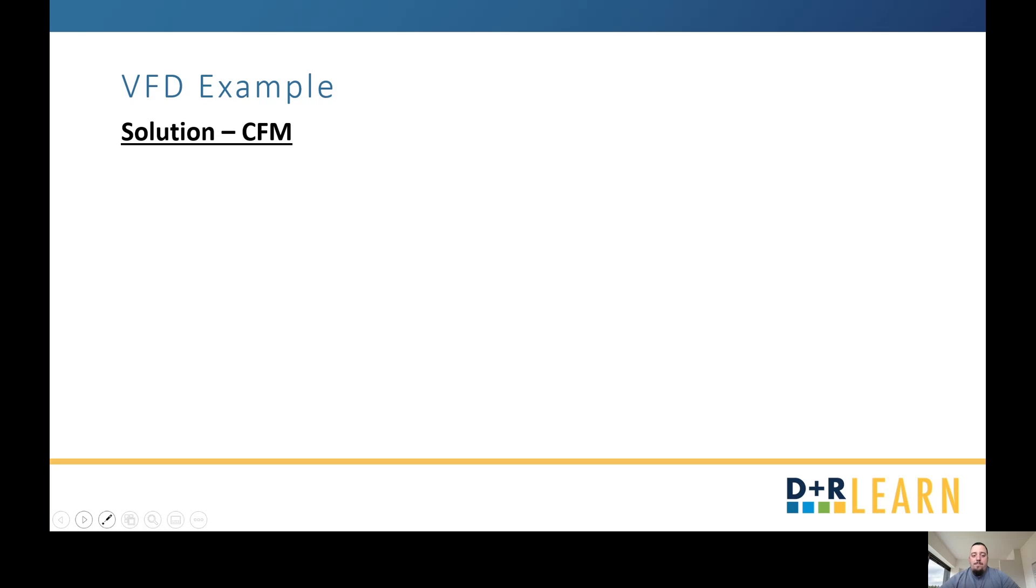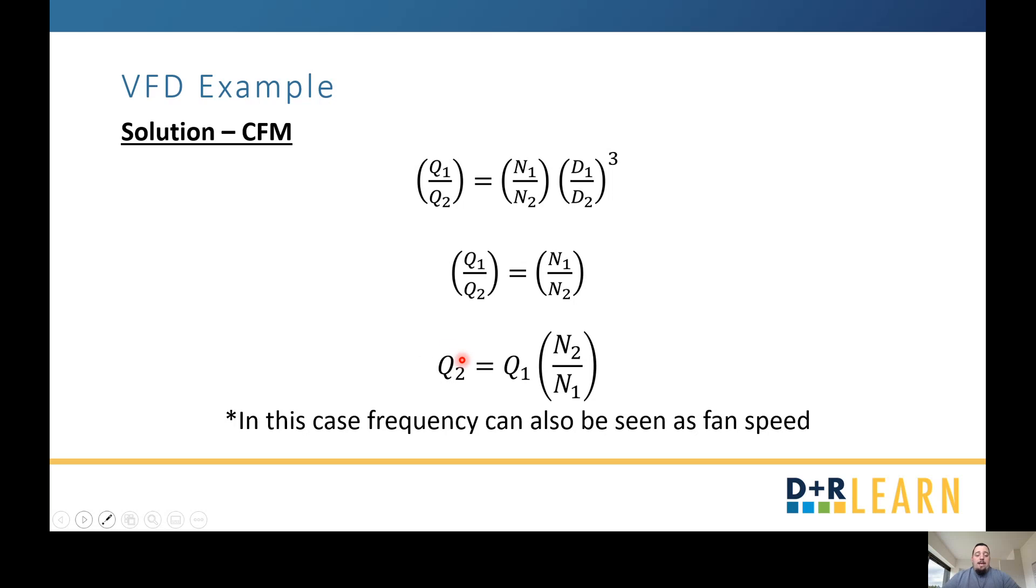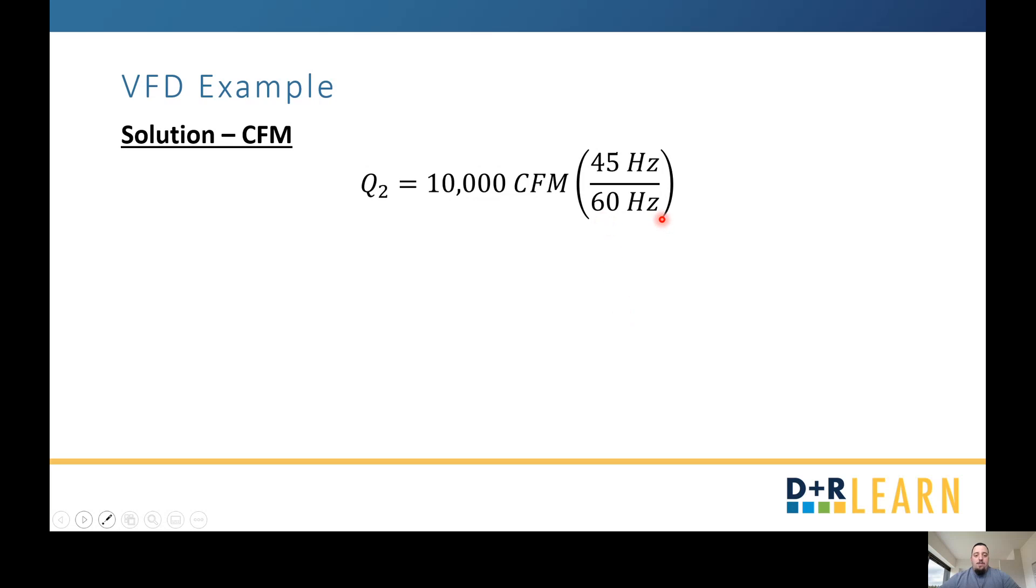Let's go ahead and start with CFM. This is the equation that we had already talked about. The diameters are the same, so we can remove this. We end up with this value here and solve for what our new CFM is going to be. And as I discussed earlier, in this case, you can use the frequency as the fan speed. 100% on a VFD is equal to 60 hertz. This is our original operating at 100% speed. If we were to drop it to 45, we have 10,000 CFM times 45 divided by 60 for a total CFM of 7,500.